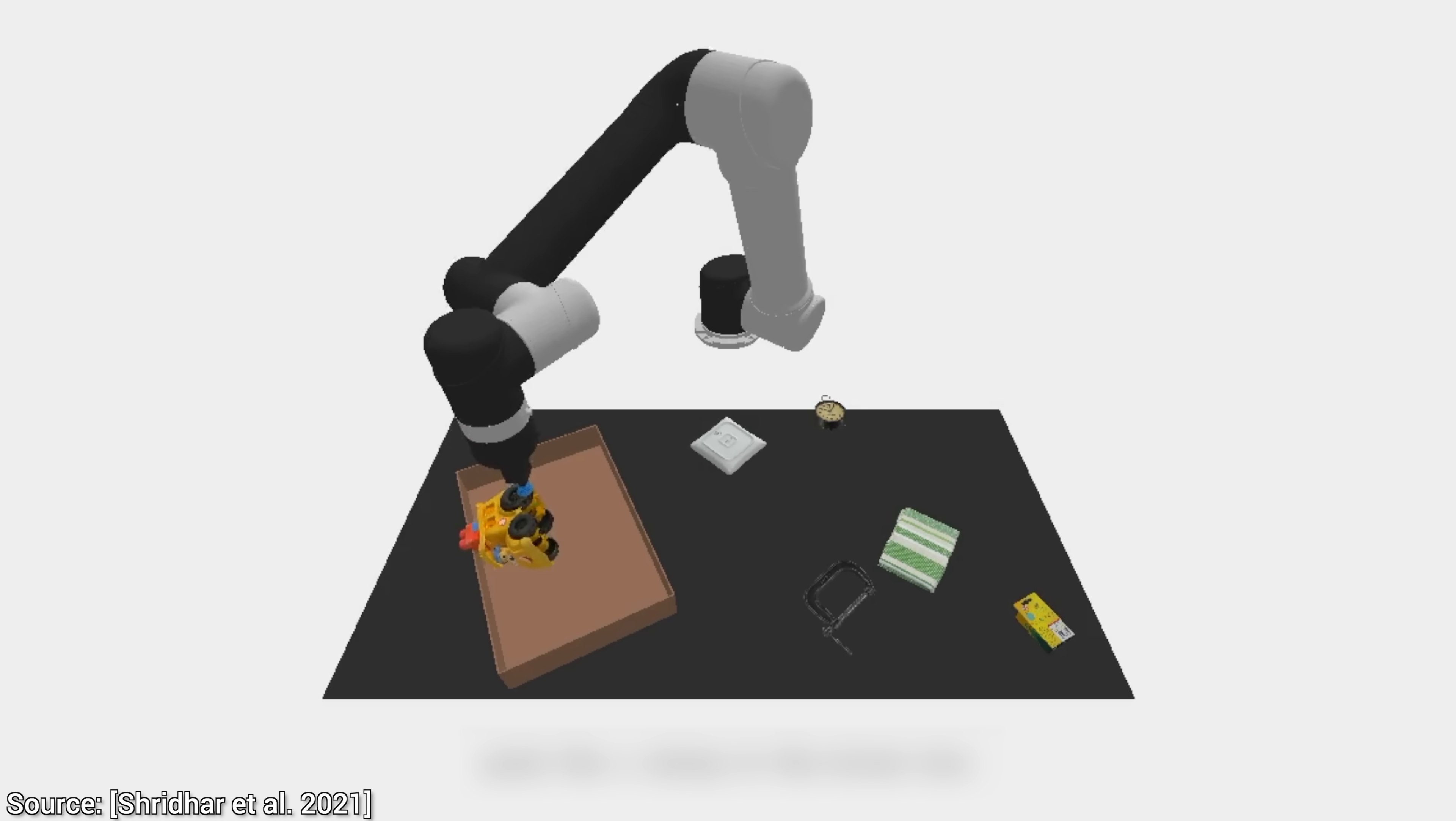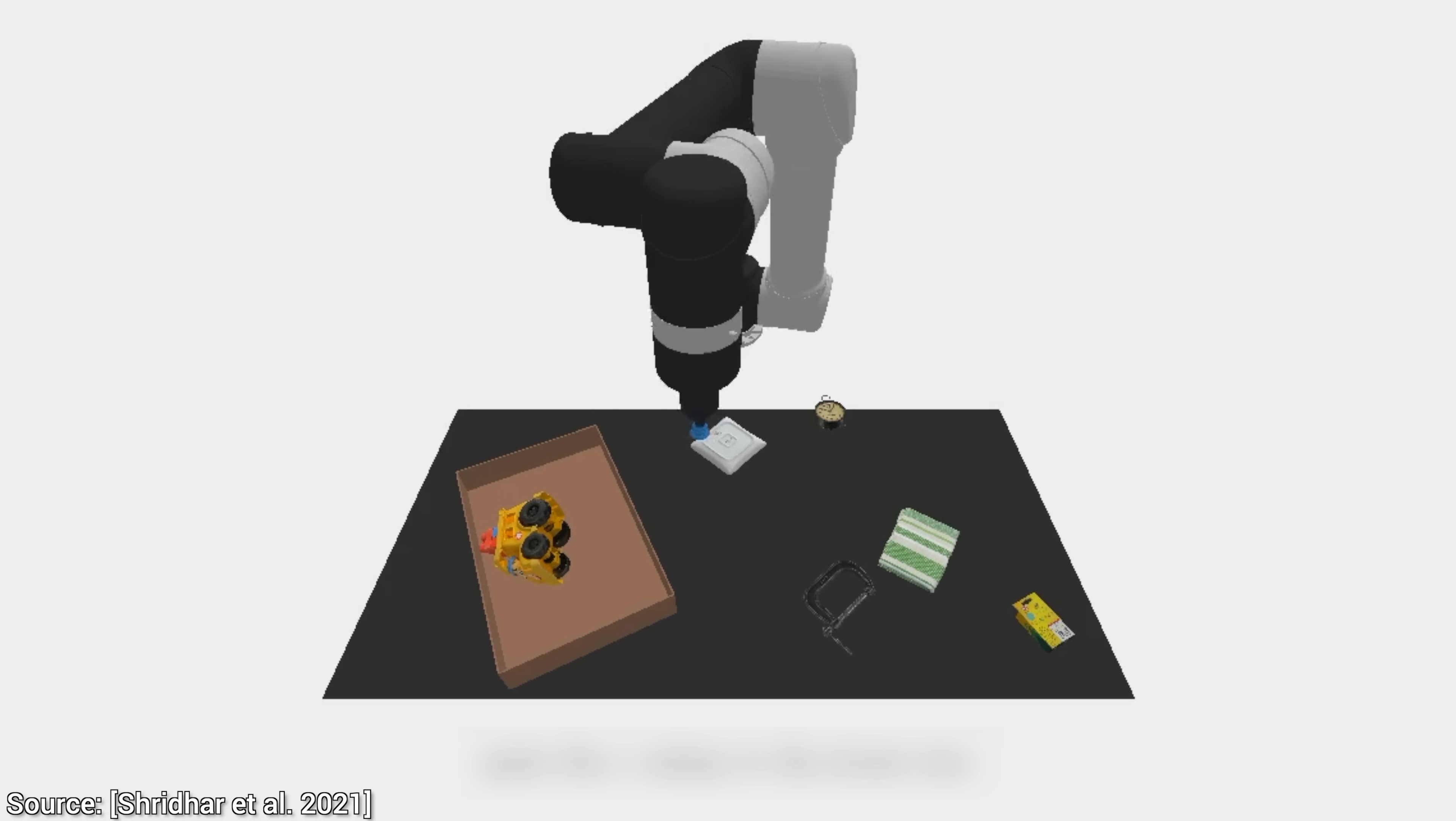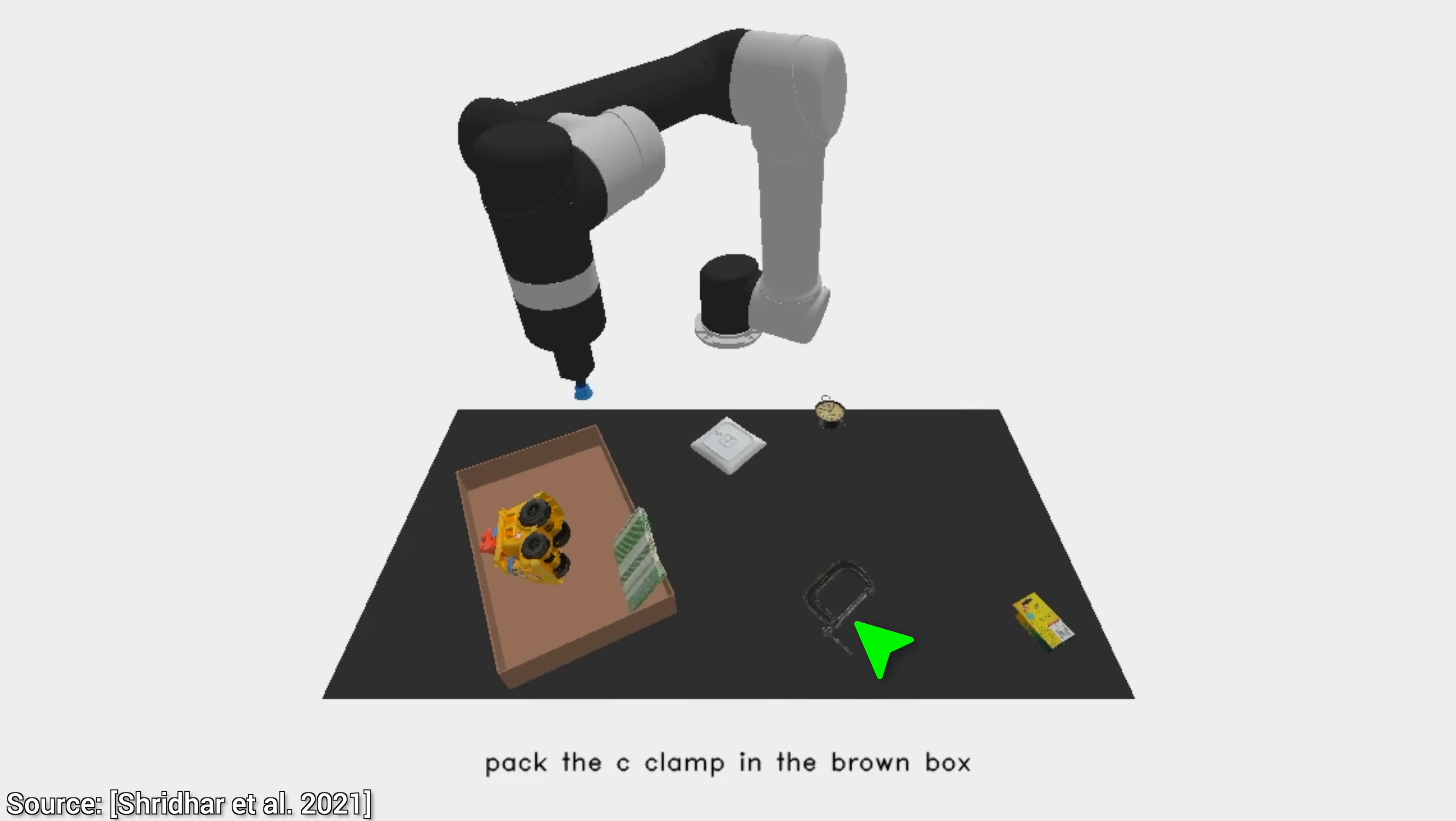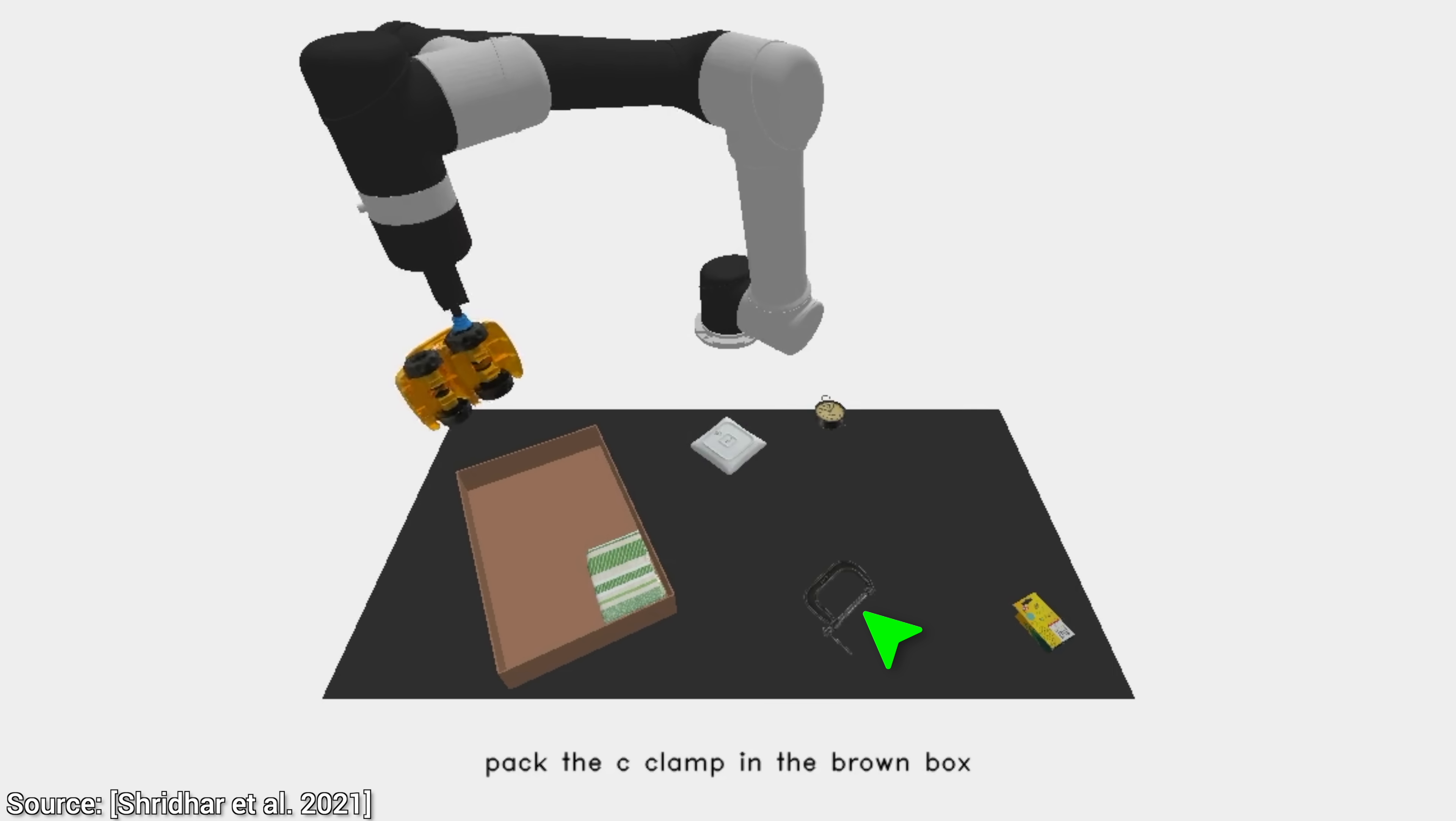Hmm, let's see, it picks up the toy school bus, so far so good. But wait a second, this is not good at all. It should have grabbed the C-clamp here, not the toy school bus. Why is that?